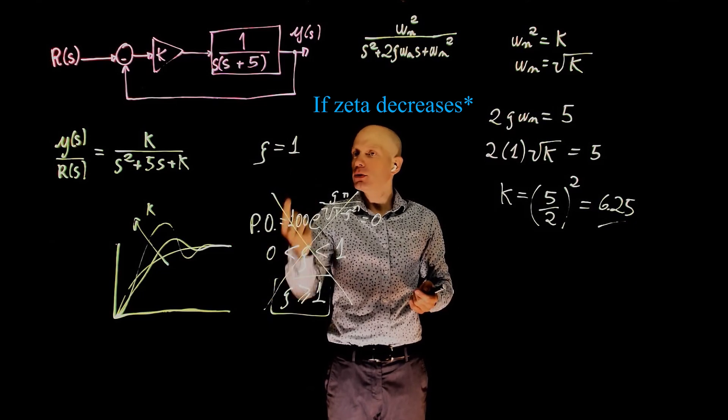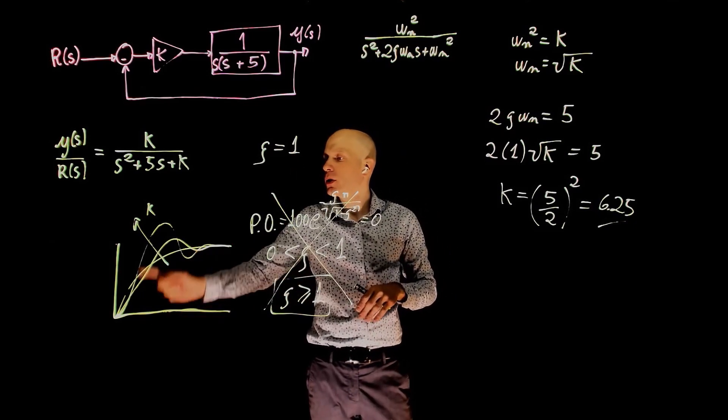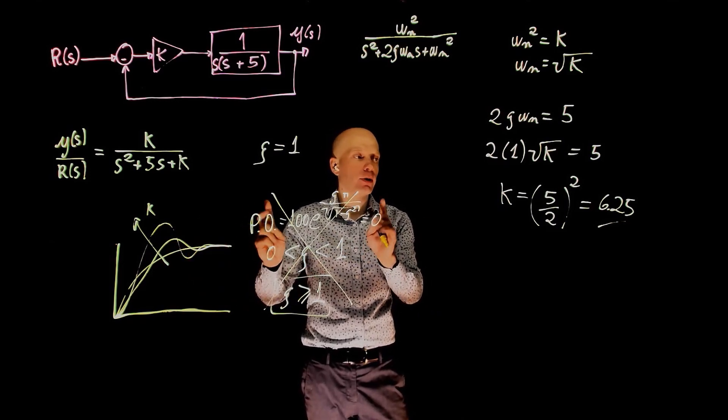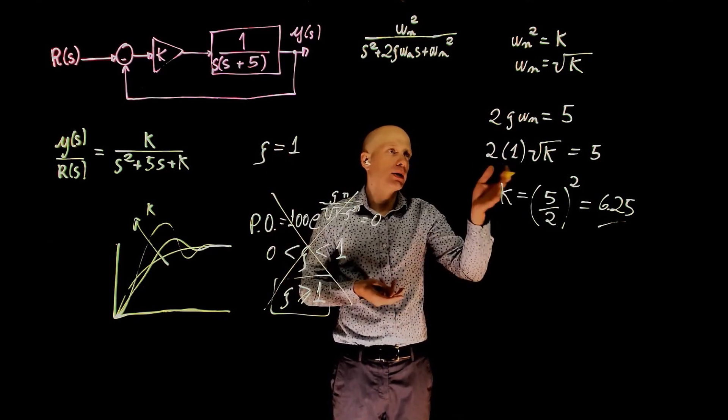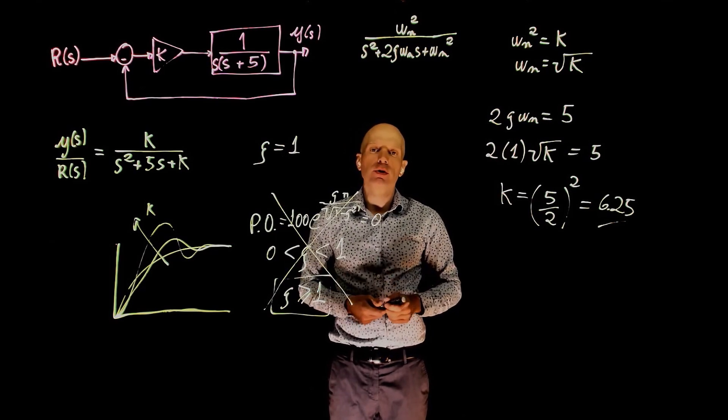If k decreases, it is slightly lower than 1, then we will start to see overshoot. And you can now calculate that overshoot with this formula, but only in those cases. And if zeta is greater than 1, then this still holds. The system has no overshoot.